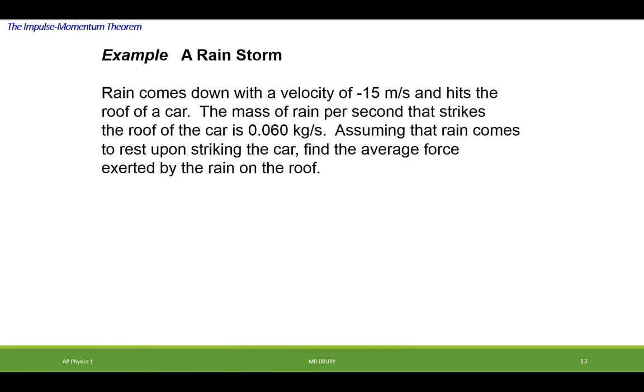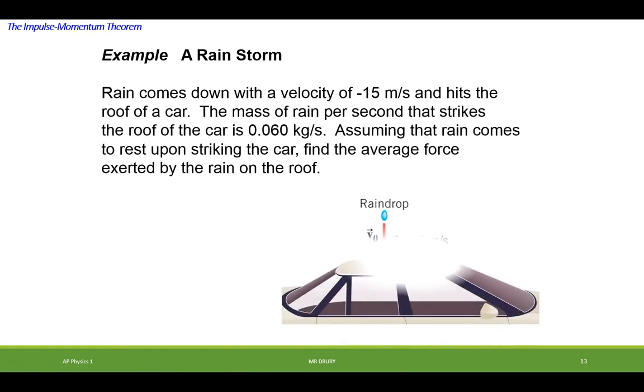So let's look at an example of this. Rain comes down with a velocity of negative 15 meters per second. Why negative? Well, if we count up as being positive, then down would be negative. And it's coming in at negative 15 meters per second, hits the roof, and we have a mass of 0.06 kilograms per second hitting the roof. And it comes to a stop.